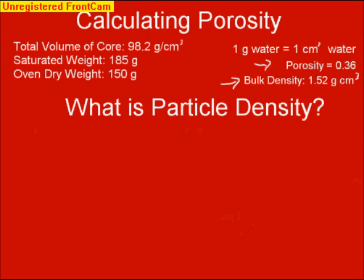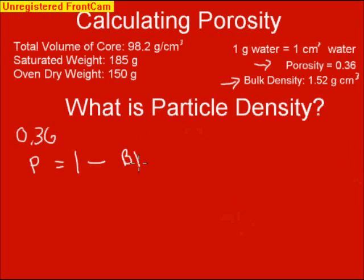We just finished calculating porosity to be 0.36. Bulk density, completed in a previous video, is 1.52 grams per cubic centimeter — that's just the oven dry weight divided by the total volume of the core. We can then find particle density from the relationship: porosity equals 1 minus bulk density over particle density.